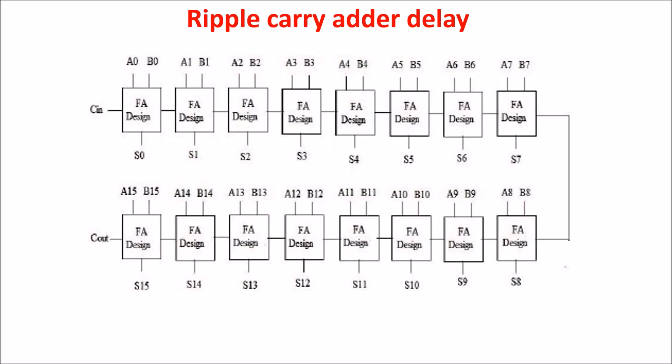Here we see a ripple carry adder of 16 bits. As we saw, the delay is related to the carry propagation time, and the higher the number of bits, the longer the carry propagation time, because in the worst condition, the carry has to pass through all the full adders till the end.